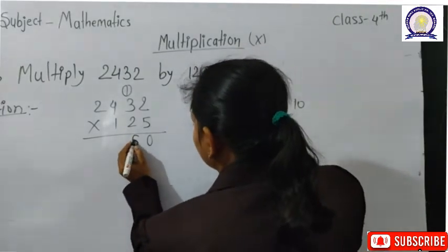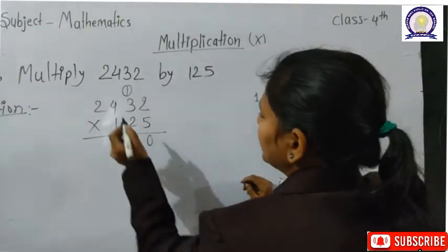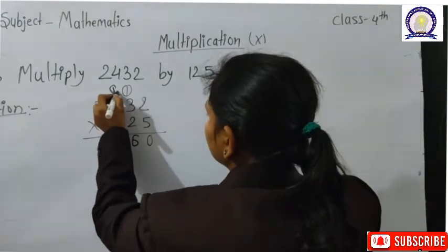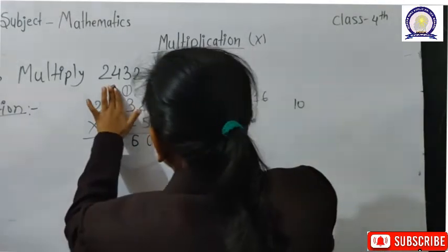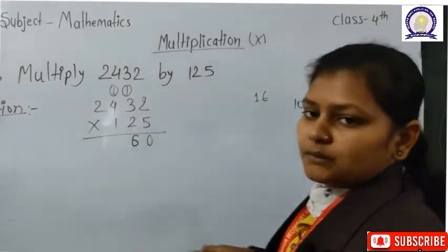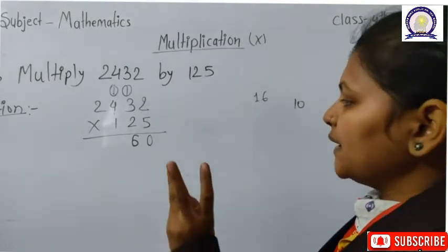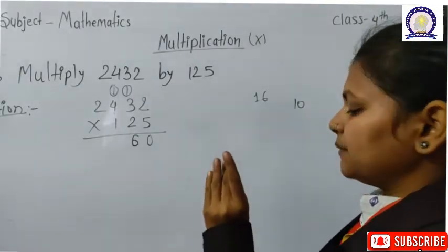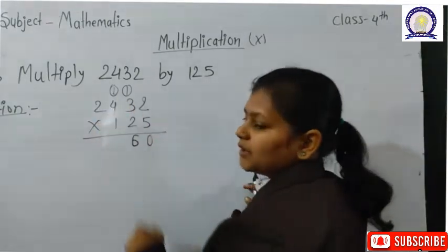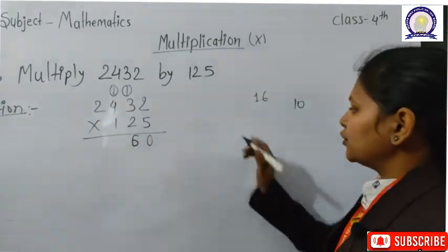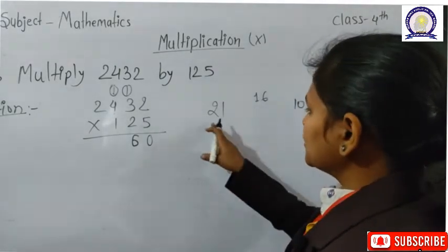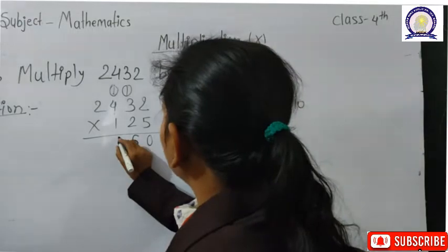We read the 5 times table. Read it 2 times — 5×2=10. Since 10 has two digits, write 0 in the box and 1 as carry. Then read 5 times table 3 times — 5×3=15, plus carry 1 = 16. Two digits: write 6 in the box and 1 as carry.